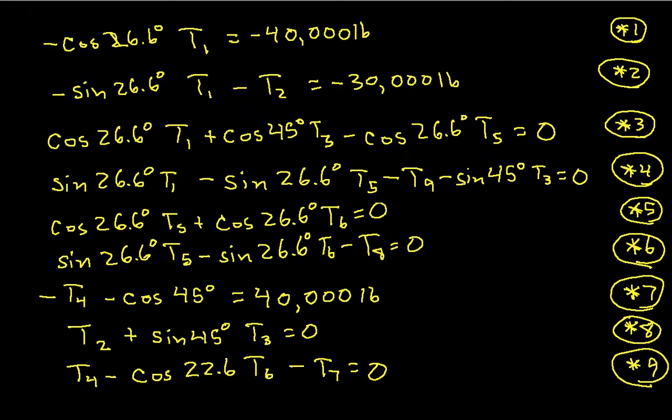Again, these came from joint D, this is the X and the Y, and this came from joint E, and it was the X. Okay, so I have nine equations and nine unknowns.